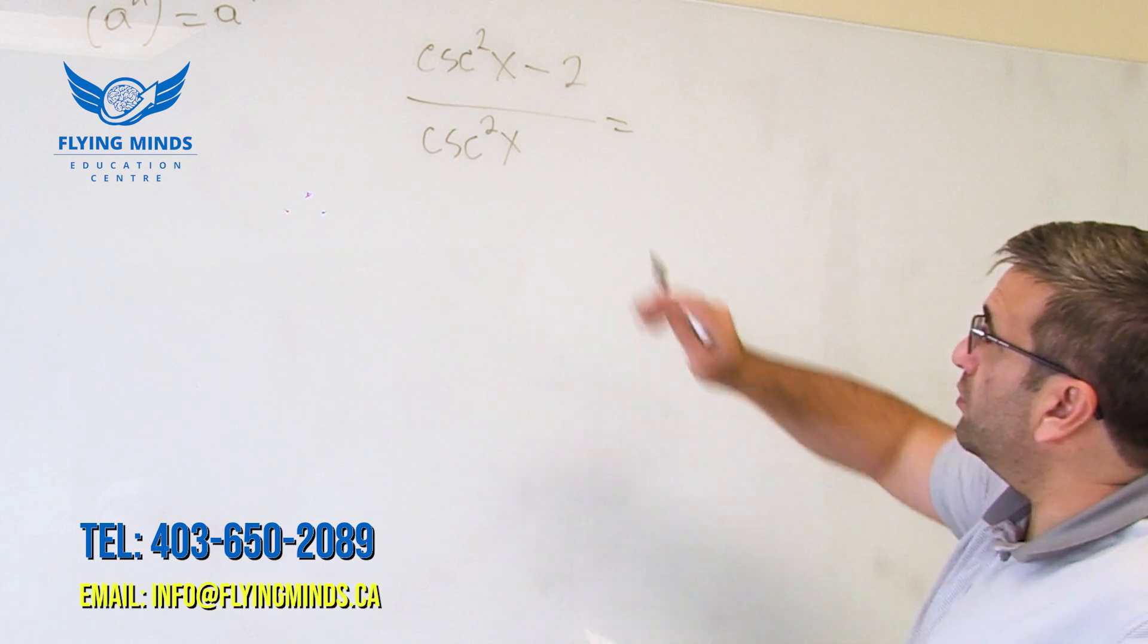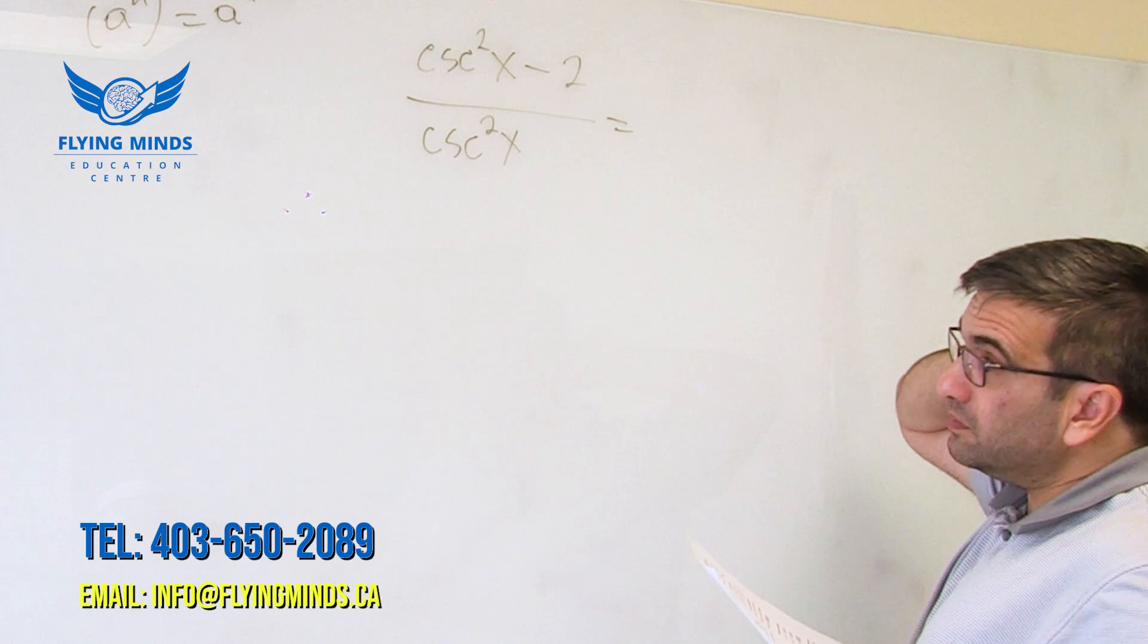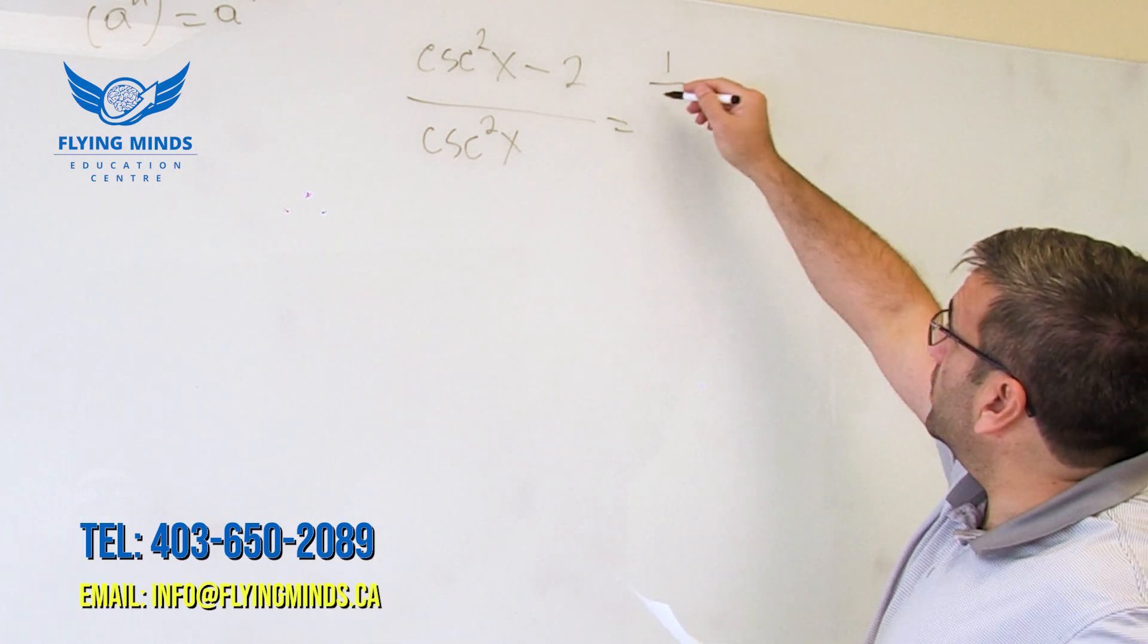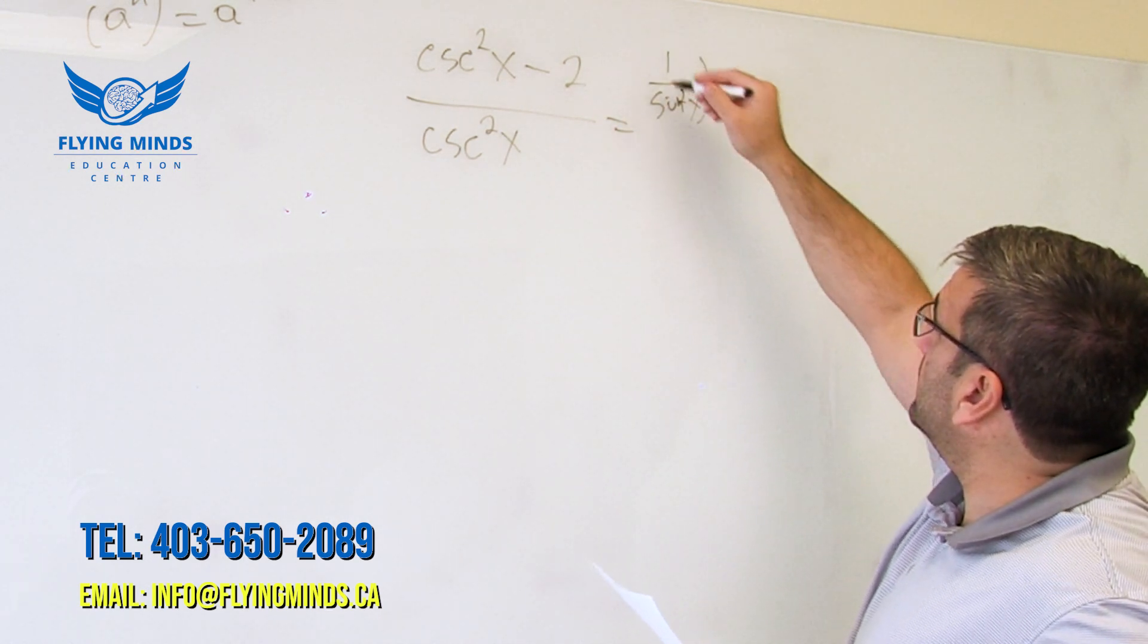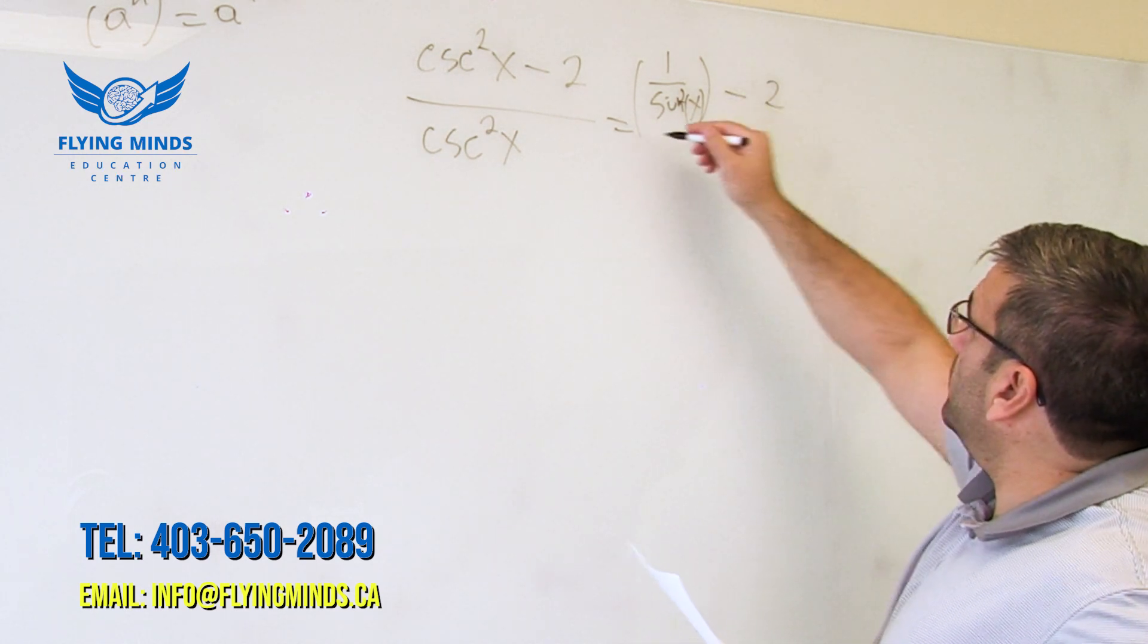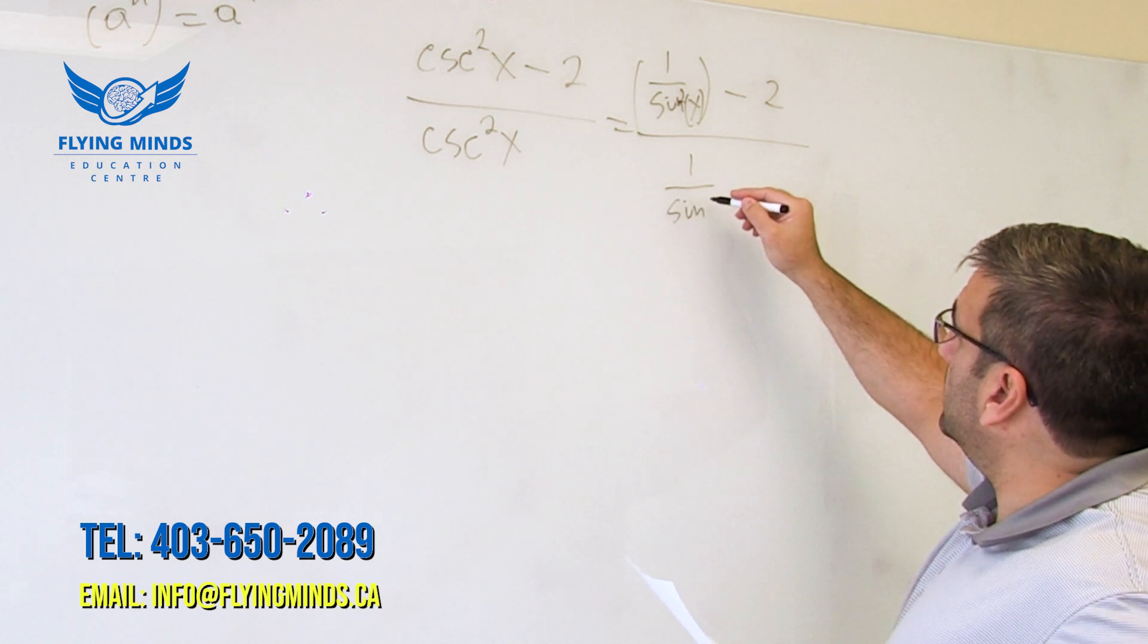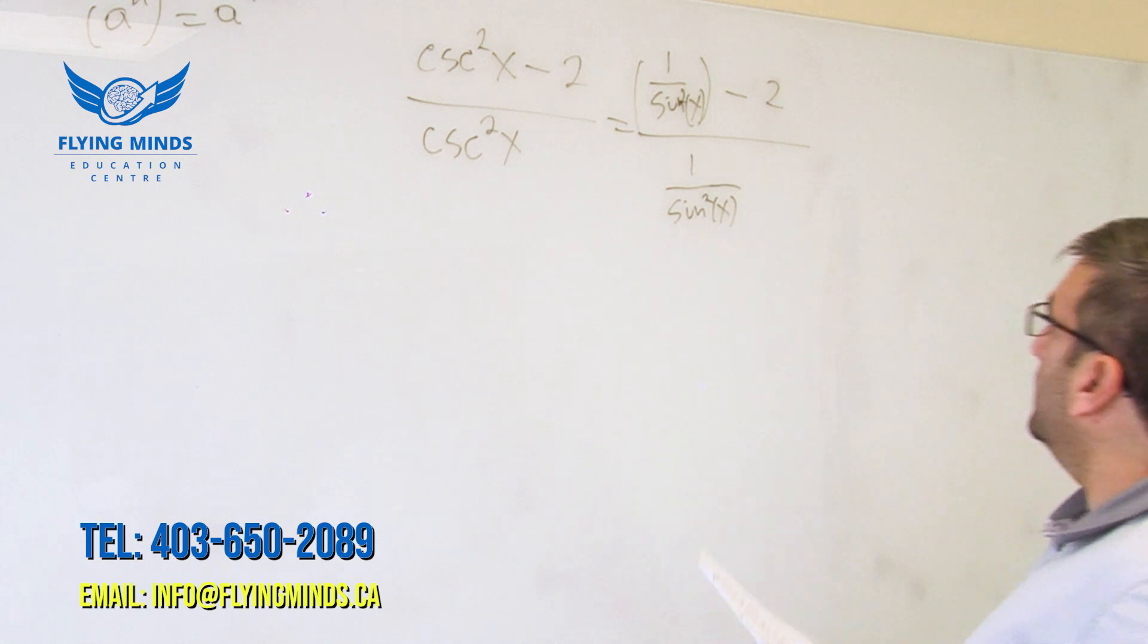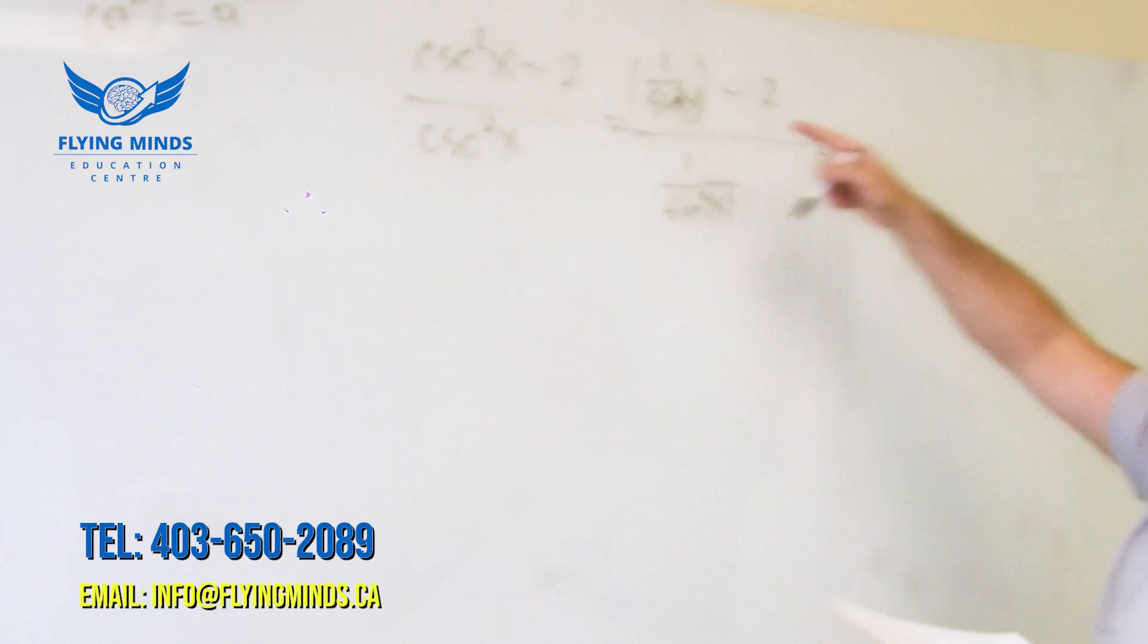Probably, let's try to rewrite. What is cosecant? 1 over sine. So it's 1 over sine squared x minus 2 over 1 over sine squared x. So we can bring to common denominator.